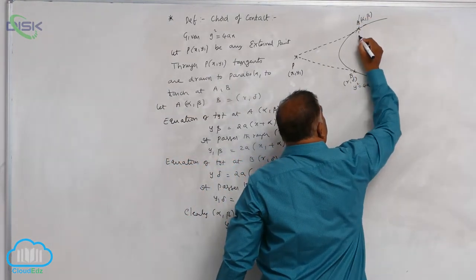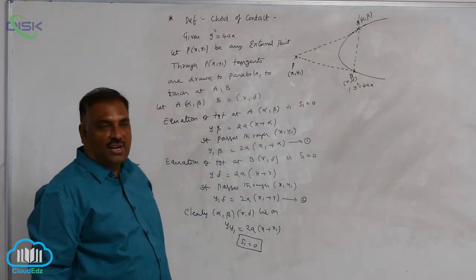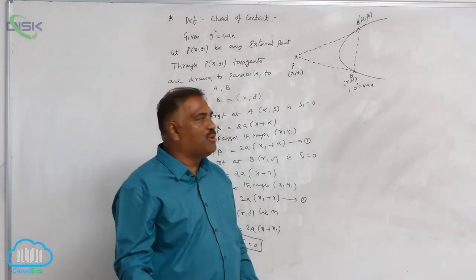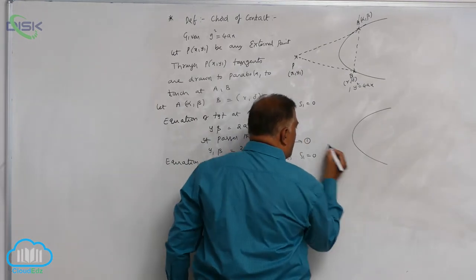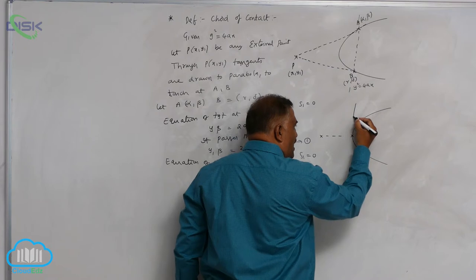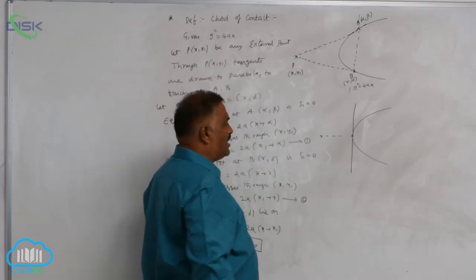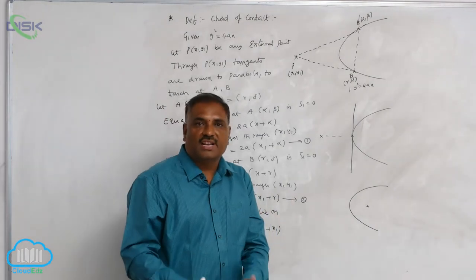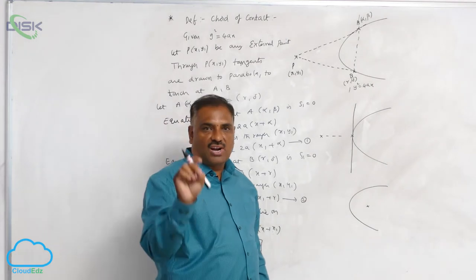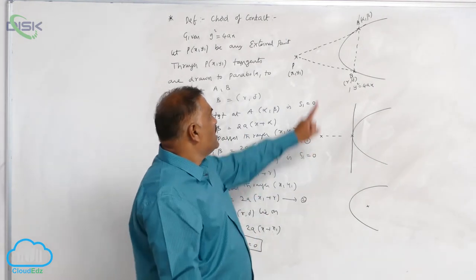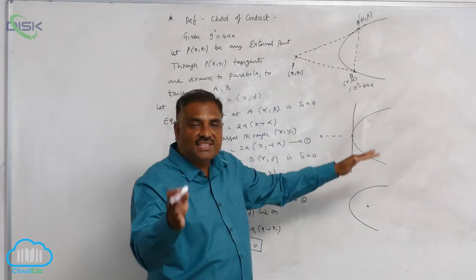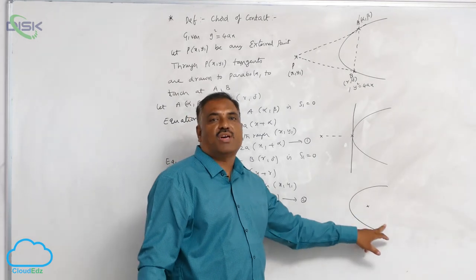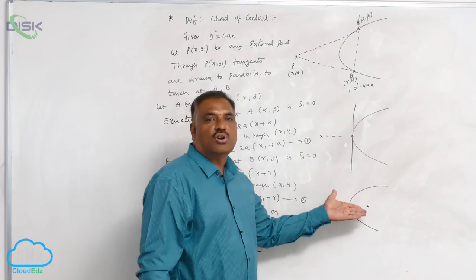The chord of contact is the line joining these two points of tangency. When the point lies outside, the chord of contact lies inside and intersects the parabola in two points. As the point approaches from external to on the parabola, the chord of contact coincides with the tangent at the point of contact. When the point lies inside, no tangents can be drawn, and hence no chord of contact is possible. So the existence of the chord of contact depends upon the position of the point.